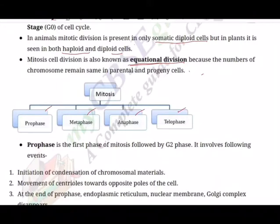In animals, mitotic cell division is only seen in diploid somatic cells, except the gametes. Plants show mitotic division in both haploid as well as diploid cells. M phase is the most dramatic period of the cell cycle, involving a major reorganization of virtually all components of the cell. The number of chromosomes in parent as well as in progeny cell remains the same, so it is called equational division.